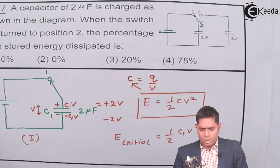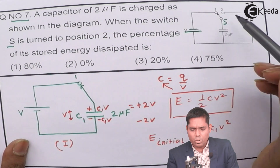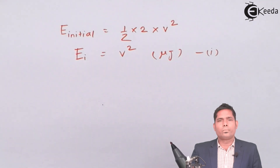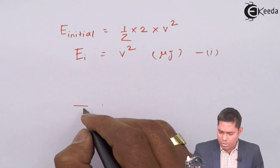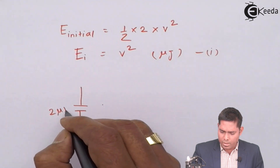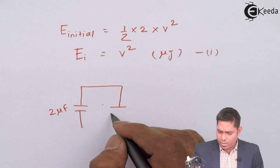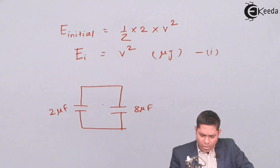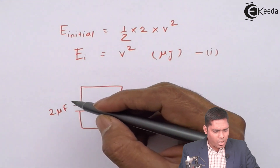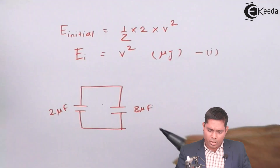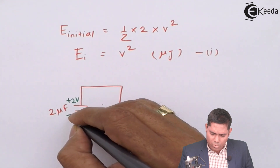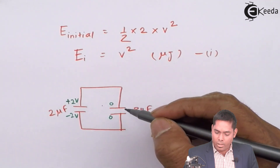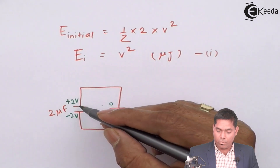Now the situation is changing. As you change the switch to the second position, the two capacitors will be connected and the battery will be out of the circuit. So we have this situation: this is 2 microfarad and this will be 8 microfarad connected together. Initially there was a charge of C1·V = 2V on the first capacitor, so it is plus 2V on one plate and minus 2V on the other plate, while the 8 microfarad capacitor initially had zero charge.